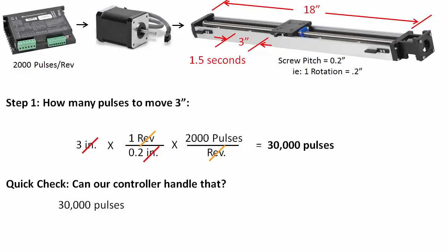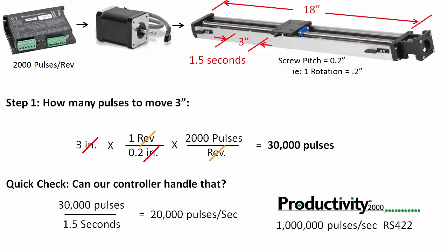Well, we need to issue those 30,000 pulses in 1.5 seconds so our controller needs to output 20,000 pulses per second on average. Can our controller handle that? Well, I'm using our Productivity 2000 controller and it looks like its high speed output module can handle up to a million pulses per second using the RS422 outputs or 500,000 pulses per second if using the open drain outputs. Either way, we are in great shape since we only need around 20,000 pulses per second.